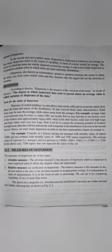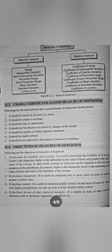Dispersion has different methods — there are absolute methods and relative methods, which you have already covered in your numerical portion. Then, what are the characteristics of a good measure of dispersion, and the objectives of measure of dispersion. And this is important: the difference between mean deviation and standard deviation.